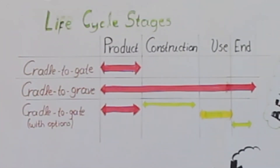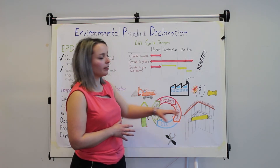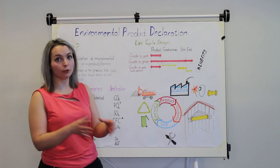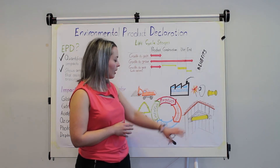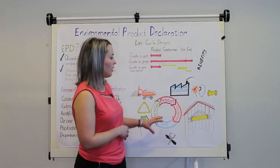In the cradle to grave approach, we have all four stages of the life cycle of the product: the product stage, the construction, the use, and the end. Going back to our example of the hydraulic probe, the construction stage includes all the emissions produced during transport of the product from our depot to site and back, and all the emissions produced during installation. The use stage includes all the maintenance, repairs, replacement, refurbishment, and there is also provision for the operational energy and cost of the product.